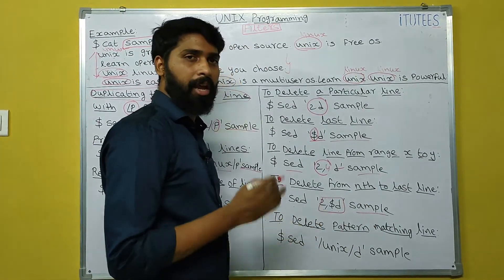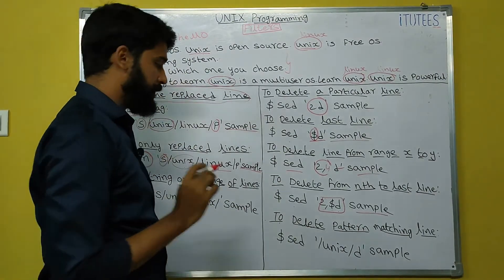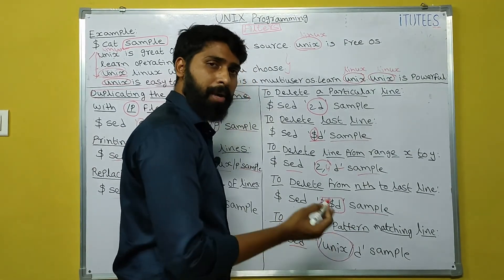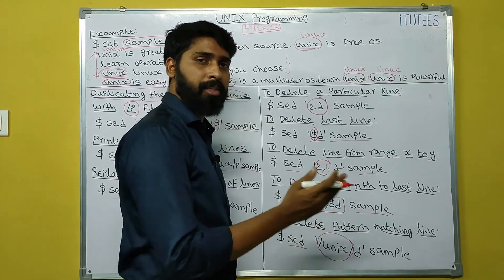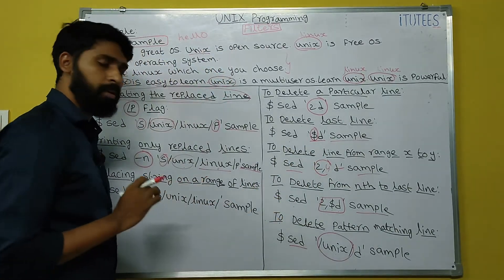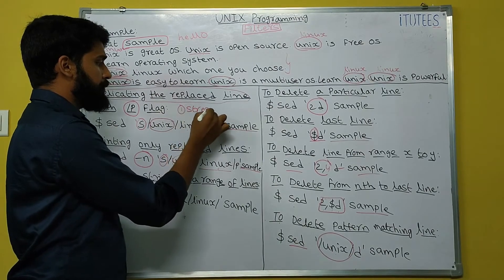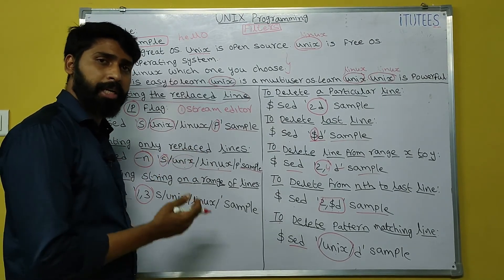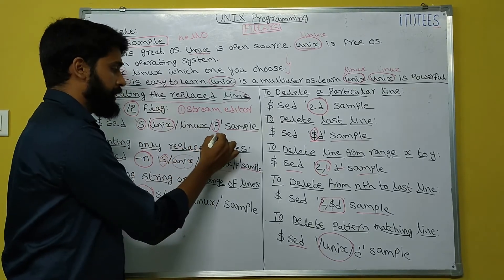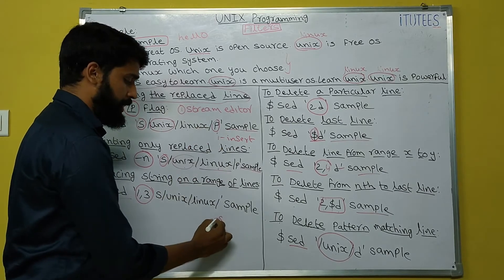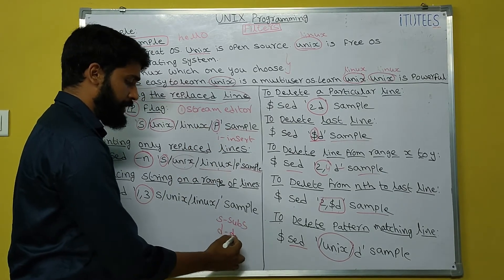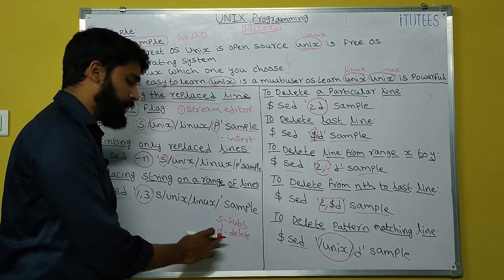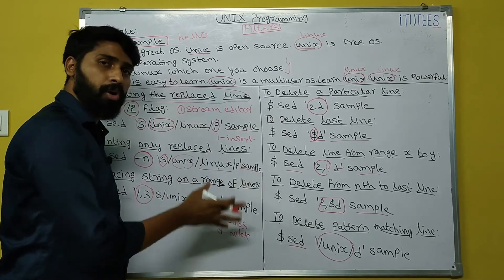To delete pattern matching lines: to delete any line that contains the pattern 'unix', use: SED '/unix/d' sample. If the unix pattern matches any line, that line is deleted from the output. Summary: SED is a stream editor used for filtering or transforming text. We use 'i' to insert, 's' to substitute, and 'd' to delete. Importantly, when inserting, substituting, or deleting, the changes are not made to the actual file.